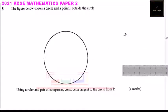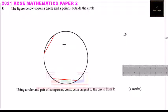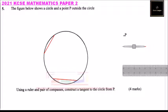The center of the circle has not been given, so what we do is we make two chords. We use a property whereby the perpendicular bisector of a chord passes through the center of the circle. Where the two bisectors of these two lines meet, we will be able to locate the center of the circle.